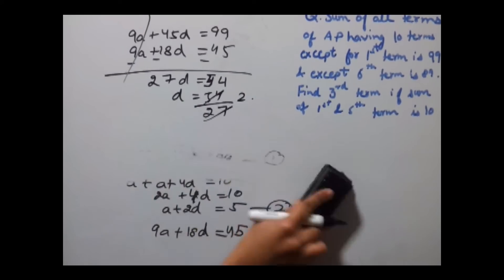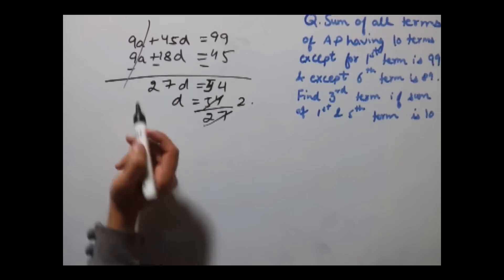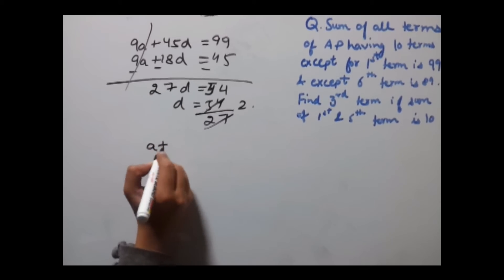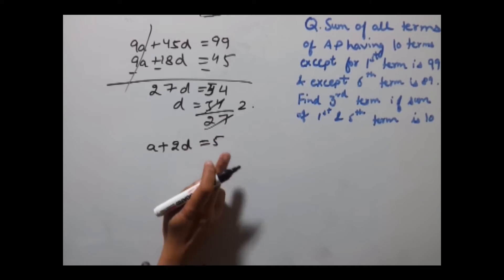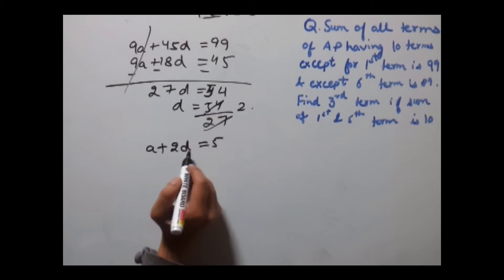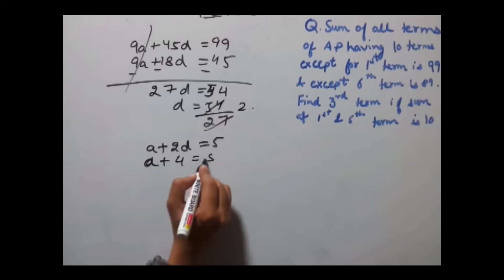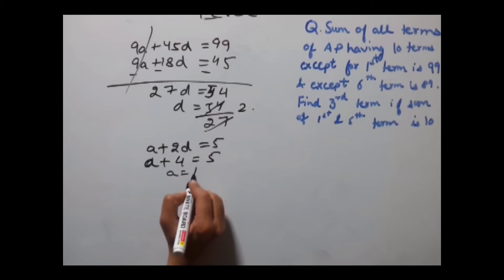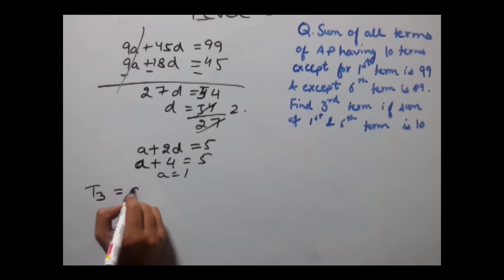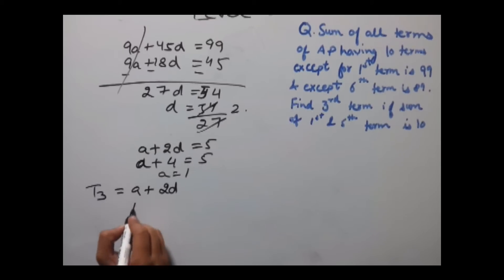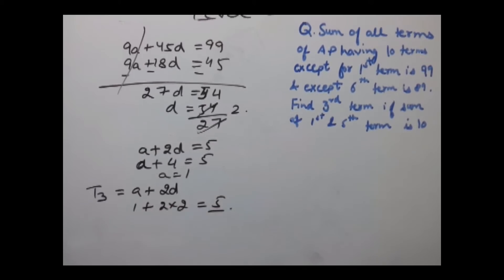Now we find a. Substituting d = 2 into the second equation: a + 2(2) = 5, so a + 4 = 5, giving a = 1. Therefore T3 = a + 2d = 1 + 2(2) = 1 + 4 = 5. The answer is 5.